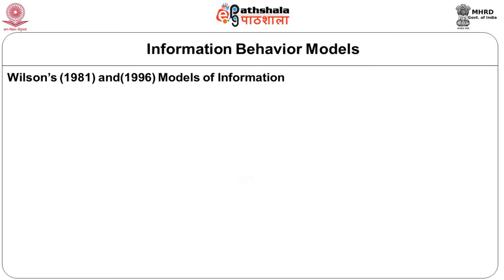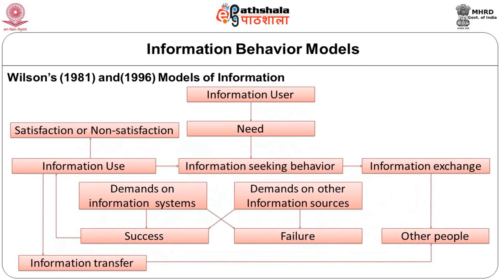Wilson proposed a model of information seeking behavior in 1981, revised in 1996, in which he concentrates on the information user, their need, and seeking behavior. That seeking behavior may lead to exchanging ideas with another person, or entering into an information system, or demanding on an information source. When demanded on the information system or other information sources, they may succeed or fail. Once successful, they use the information and get either satisfaction or dissatisfaction. If not successful, they go to another source, and the cycle continues.